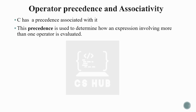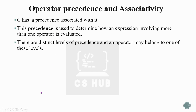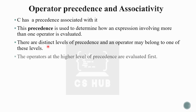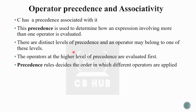An expression is evaluated and determined based on this precedence. There are distinct levels of precedence, and an operator may belong to one of these levels. Arithmetic operators have two levels: high level and second level. Star, slash, and modulo are first level; plus and minus are second level. The operators at the higher level of precedence are evaluated first, and at the lower level next.